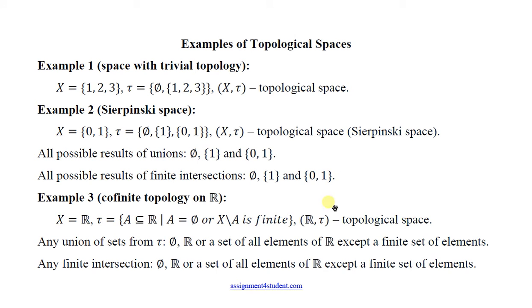Here are some examples. The first one is a space with trivial topology, because tau contains only empty set and the set X itself. The second example is Sierpinsky space. Let X be {0, 1}, and tau contain empty set, X itself, and one of the elements from X, for example {1}. Then all possible unions and intersections will result in the sets from tau. So it is a topology.